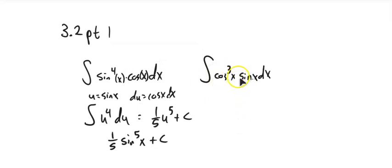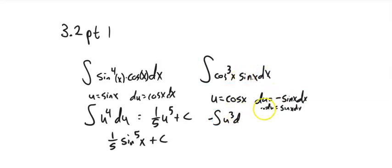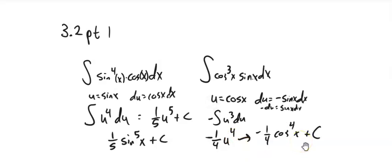Looking at the next one, I've got a lone sine and cosine to the third power. I know the derivative of cosine is negative sine, so I let u equal cosine. Then du equals negative sine x dx. I have u cubed, but I need to negate it — negative du equals sine dx. So that's du, giving me negative cosine to the fourth power plus some constant.